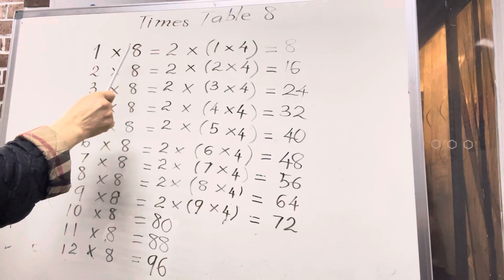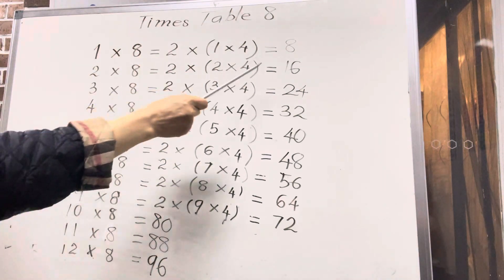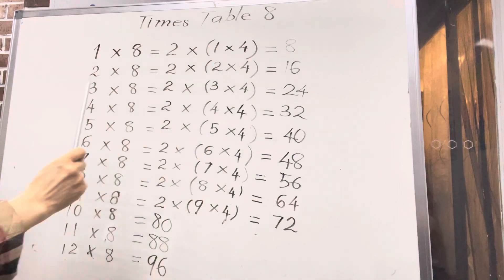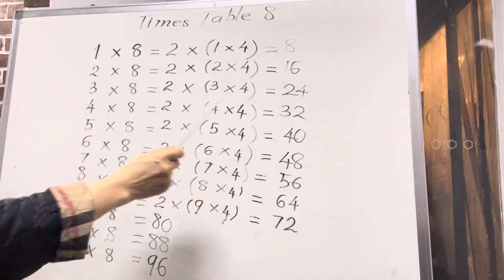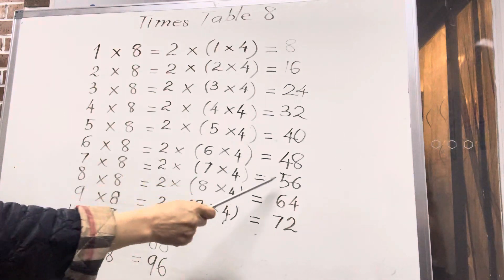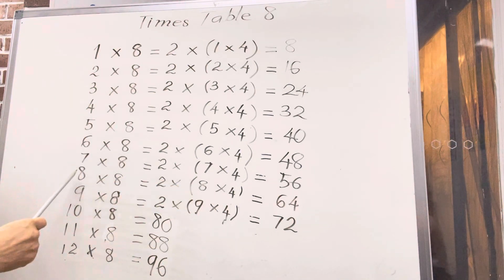Yes. One times eight, eight. Two times eight, sixteen. Three times eight, twenty-four. Four times eight, thirty-two. Five times eight, forty. Six times eight, forty-eight. Seven times eight, fifty-six. Eight times eight, sixty-four. Nine times eight, seventy-two. Ten times eight, eighty. Eleven times eight, eighty-eight.